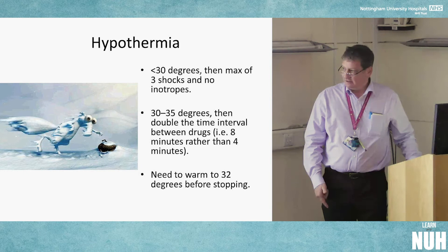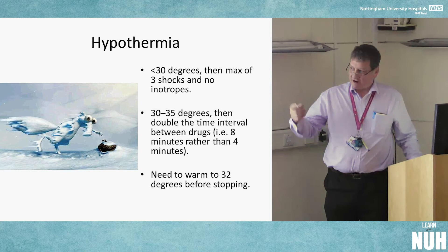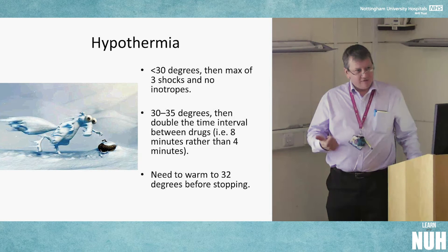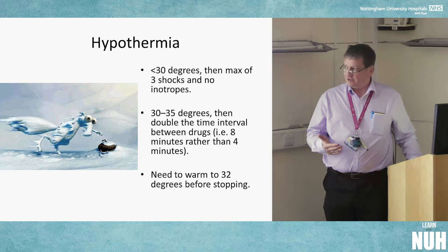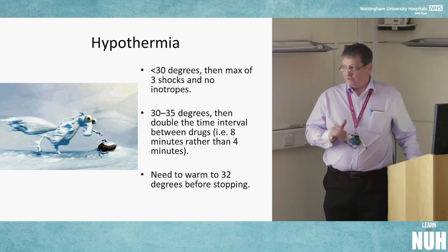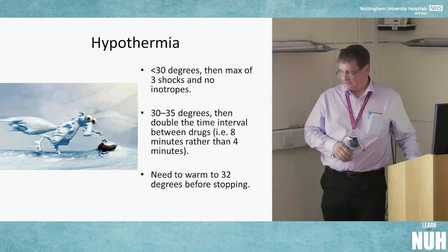Hypothermia management is the same as in adults. Below 30°C: maximum three shocks, no inotropes until above that temperature. Between 30 and 35°C: resume shocks but double the time interval — so instead of every other cycle (4 minutes), it's every fourth cycle (8 minutes). The patient needs to be warm before you can call it.